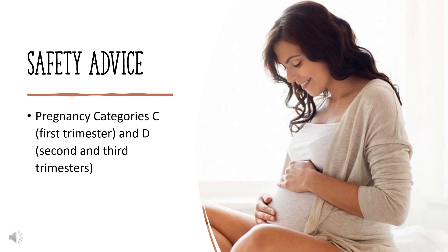Safety Advice. Pregnancy Category C (First Trimester) and D (Second and Third Trimesters). C Warnings: Fetal-Neonatal Morbidity and Mortality. Concentrations of Captopril in human milk are approximately 1% of those in maternal blood.